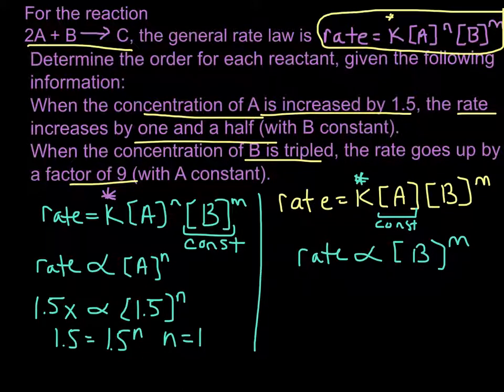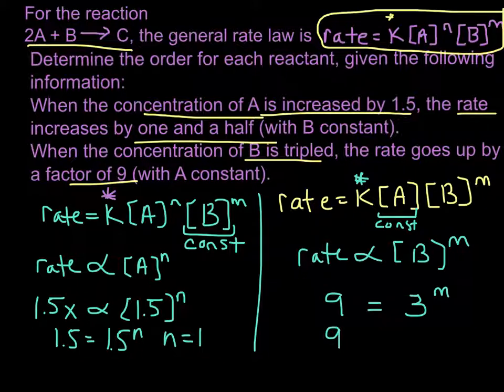Now, the problem tells us that when we triple the concentration of B, then the rate goes up by a factor of 9. So what power could we put in for m where we would have a true statement? And so if m is 2, if B is second order, 3 squared is 9. So this tells us that this reaction is second order in B.